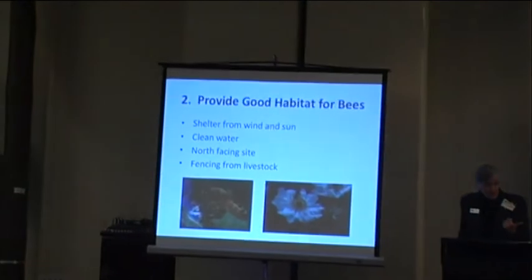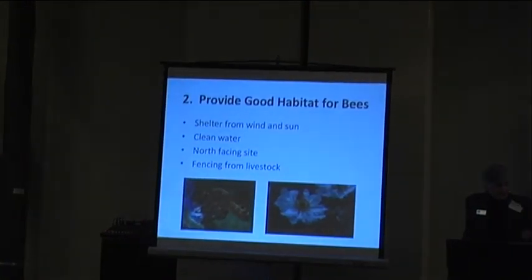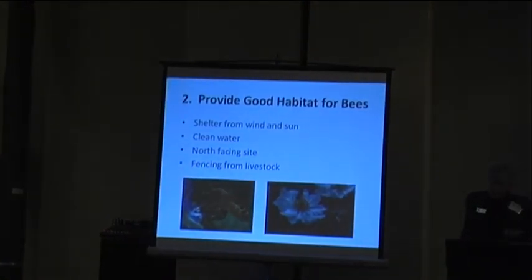For providing good habitat — Tony has explained why — you have a checklist: Have you got shelter from wind? Have you got shelter from excess sun? Have you got a sunny, north-facing site? Have you got protection from livestock? Have you got clean water? This presentation will be up on our website, so if you don't want to take notes, all of this will be available there.